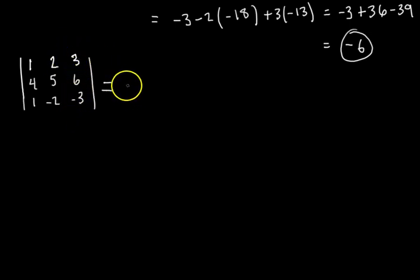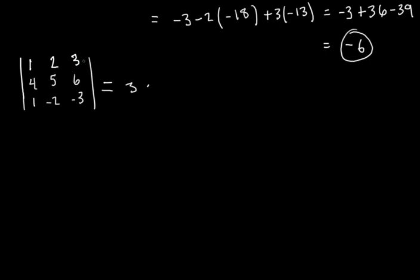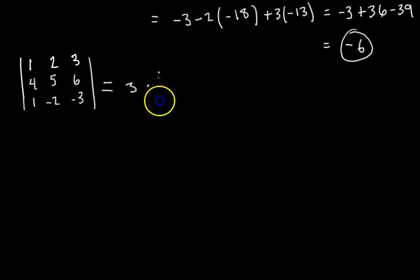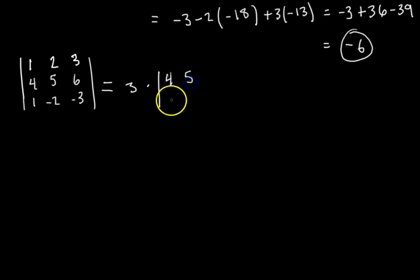Starting down the third column with the 3: is it positive or negative? The pattern goes +, −, + across the first row. So it's positive. Another way: the 3 is in the first row, third column, so 1+3=4, and (−1)^4 = +1, so this term is positive. That's where the formula (−1)^(i+j) comes from. So we have positive 3 times the determinant of the minor — crossing out the first row and third column, leaving the 2x2 matrix with entries 4, 5, 1, −2.